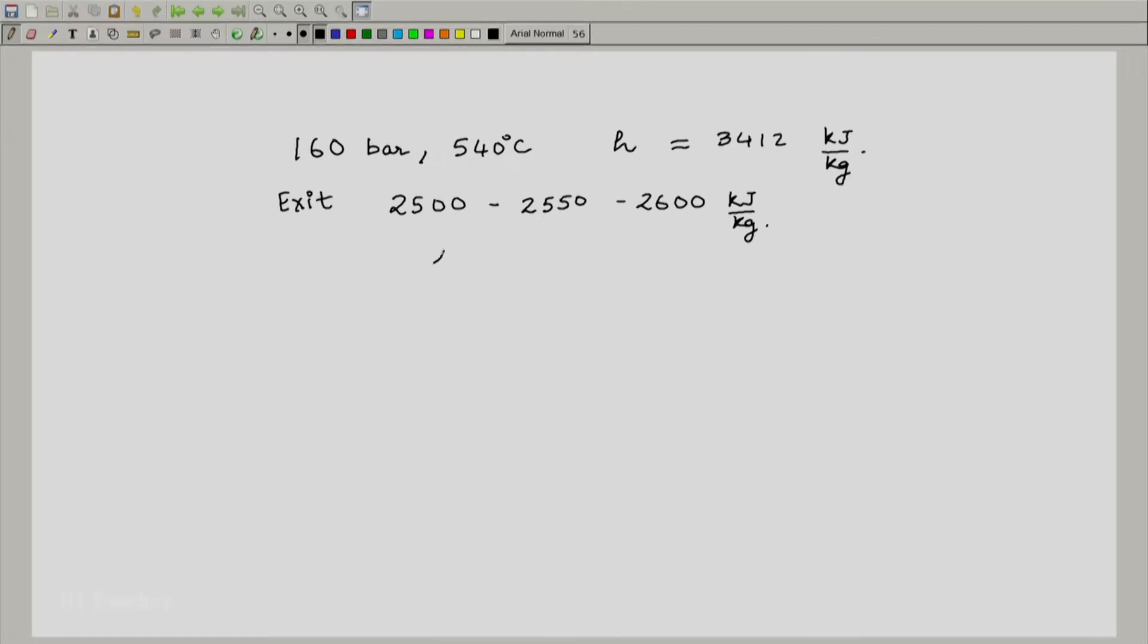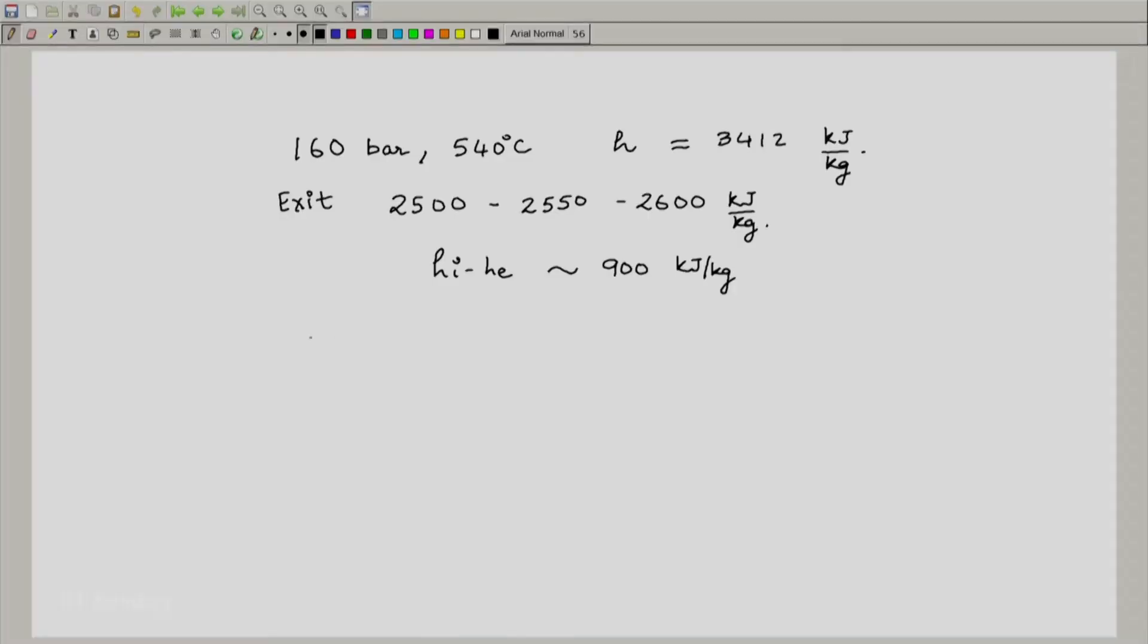If I calculate H_i minus H_e, assuming it is 3400 at the inlet and 2500 at the exit, this would be of the order of 900 kilojoule per kg. This is the kind of delta H you expect in modern steam turbines.